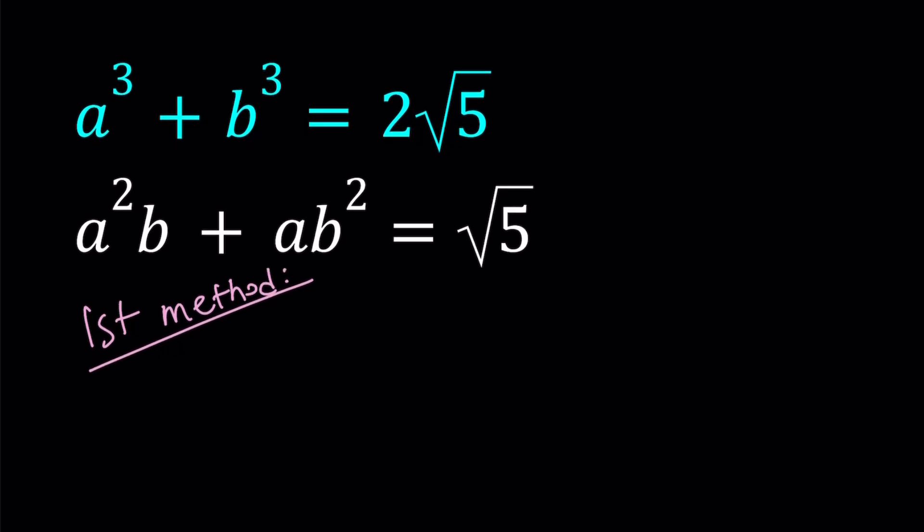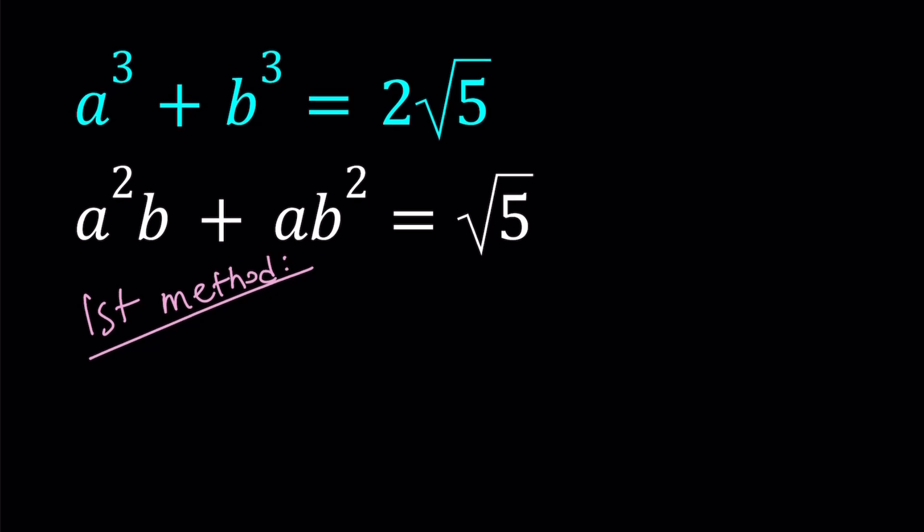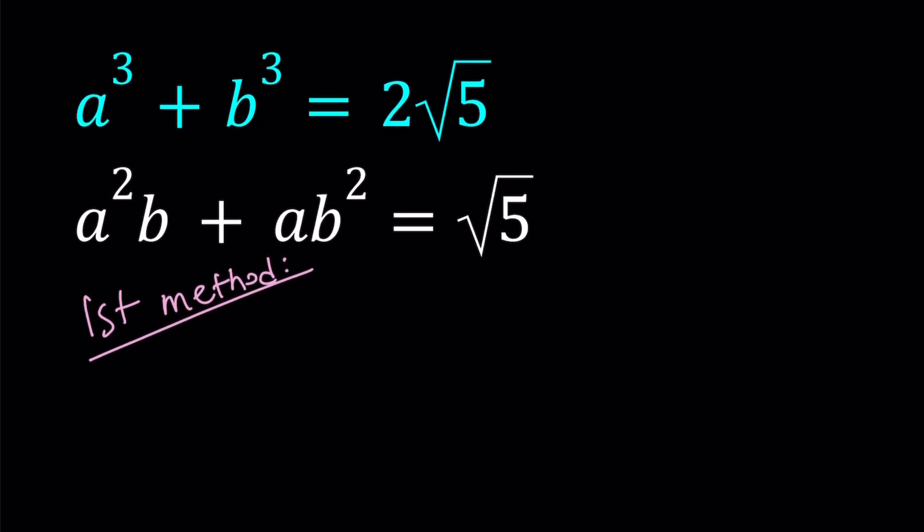For my first method, I'm going to factor a³ + b³. Obviously, this is something we can do. a³ + b³ can be written as (a+b)(a² - ab + b²). And we know that it's equal to 2√5. Awesome.